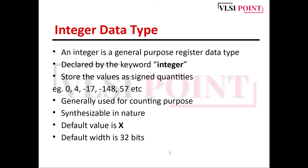The integer data type is a general-purpose register data type, declared by the keyword integer. It stores values as signed quantities, meaning you can assign both negative and positive numbers. It is generally used for counting purposes, is synthesizable in nature, has a default value of unknown, and a default width of 32 bits — if no width is specified during declaration, it defaults to 32 bits.